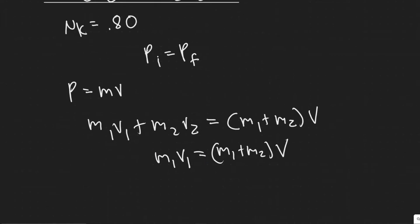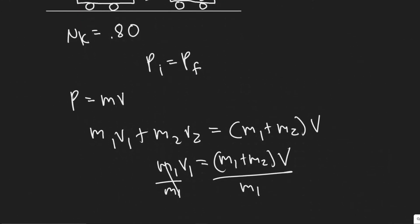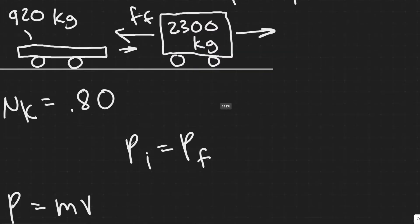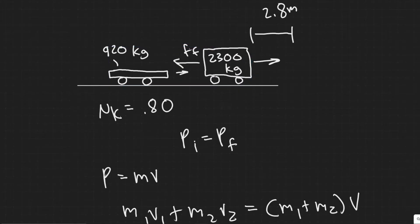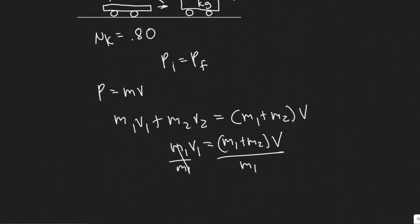If we want to find V1 — the velocity of the sports car before the collision — we know the masses, so we're going to need the velocity of the combined cars right after the collision. We need to find that V in order to find V1. That's why I wanted to show you that first — now I'll show you how to solve for V.